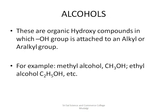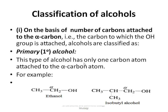We have seen examples like methanol, ethanol, propanol, butanol, etc. Now, what is the classification of alcohols? Alcohols can be classified in different ways. The first basis of classification is based upon the number of carbon atoms attached to the alpha carbon atom — that is the first carbon atom. The carbon to which the OH group is attached is called the alpha carbon. For example, in ethanol, the OH group is attached to a carbon — that carbon becomes the alpha carbon.